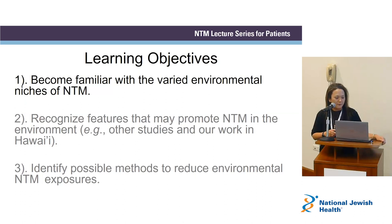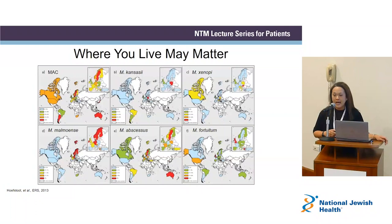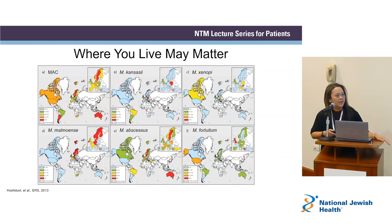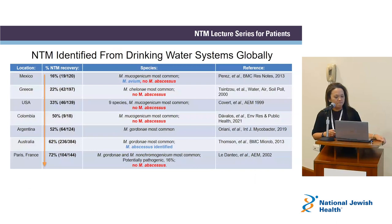These are the learning objectives. Starting with the first: become familiar with the varied environmental niches of NTM. Where you live might matter — where in the world you live may have a role in which NTM species you are exposed to. This map demonstrates where particular organisms of NTM are more predominant geographically compared to other places.